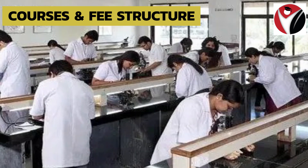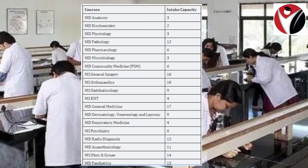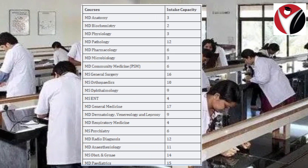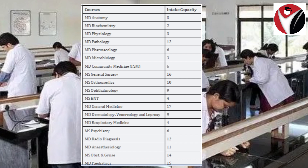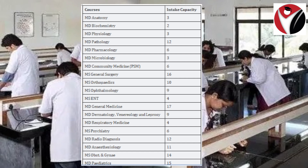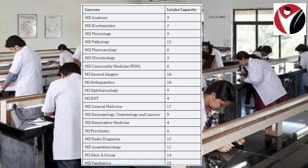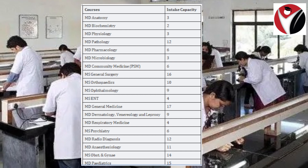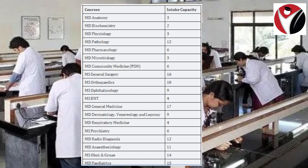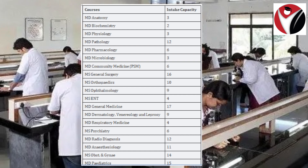Now let's talk about intake capacity. The intake capacity is different for every course. For Anatomy there are 3 seats, Biochemistry has 2 seats, Physiology has 3 seats, and Pathology has 12 seats.